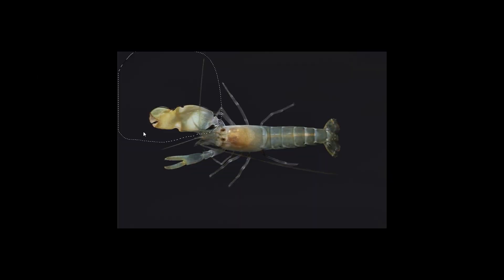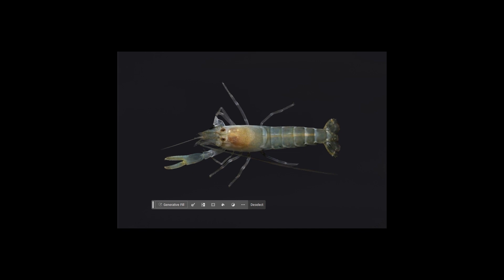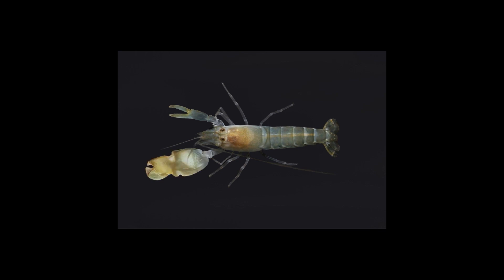For example, when the snapping claw is lost, the missing limb will regenerate into a smaller claw, and the original smaller appendage will grow into a new snapping claw.